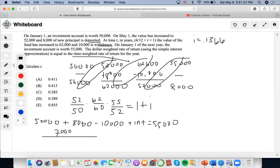Now we can set up the equation for the numerator. So initial $50,000, then we do plus $8,000.